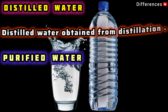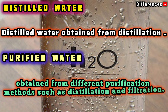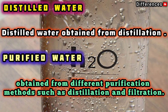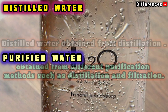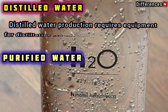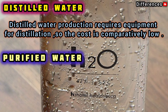Distilled water is obtained from distillation. Purified water is obtained from different purification methods such as distillation and filtration. Distilled water production requires equipment for distillation, so the cost is comparatively low.